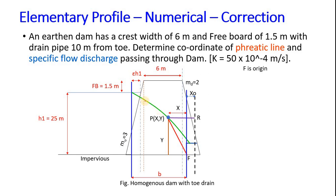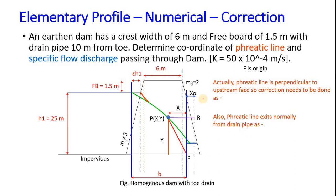As well as enters the face perpendicularly. So we have already found the equation, now it's time for correction. Let's see how it is corrected. Phreatic line is perpendicular to the upstream face, so correction needs to be done. So our new phreatic line will be starting from this point, and also the phreatic line exits normally from the drain pipe. So this is how the phreatic line exits. Hence our phreatic line becomes parabolic, exits and enters normally.